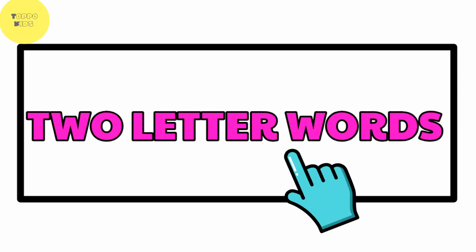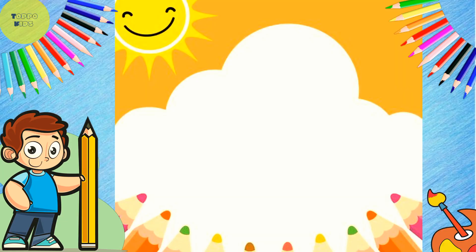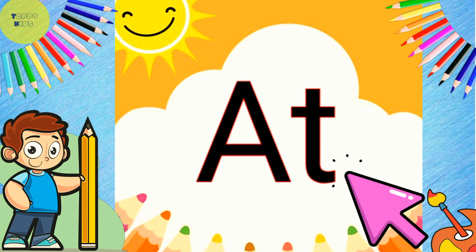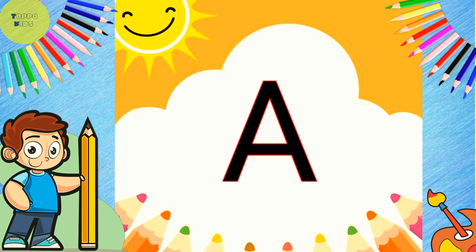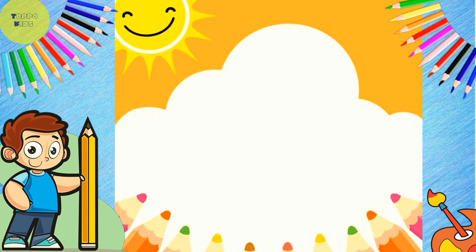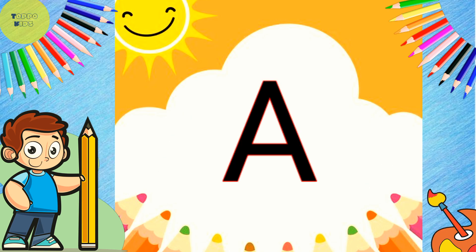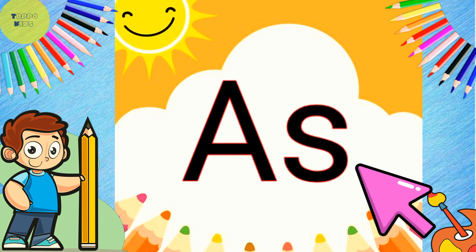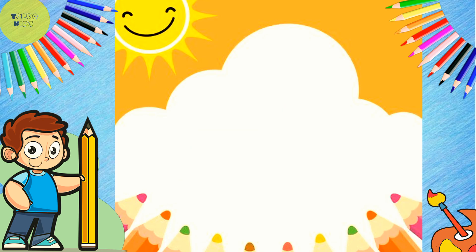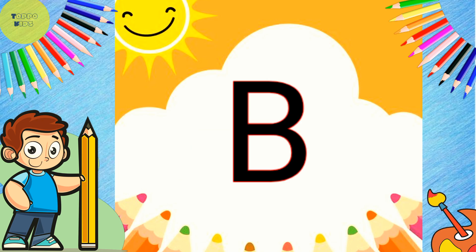Two letter words. A, T — at. A, M — am. A, S — as. A, N — an.